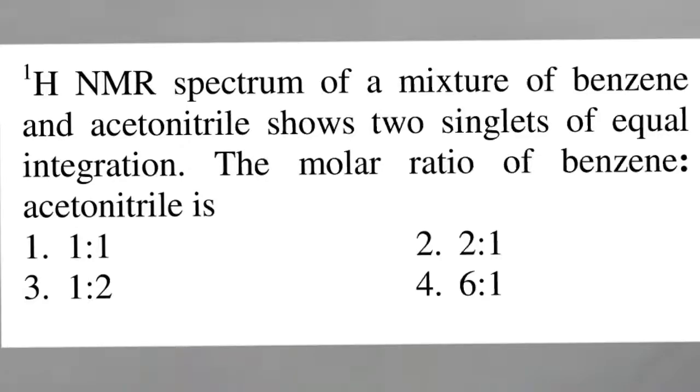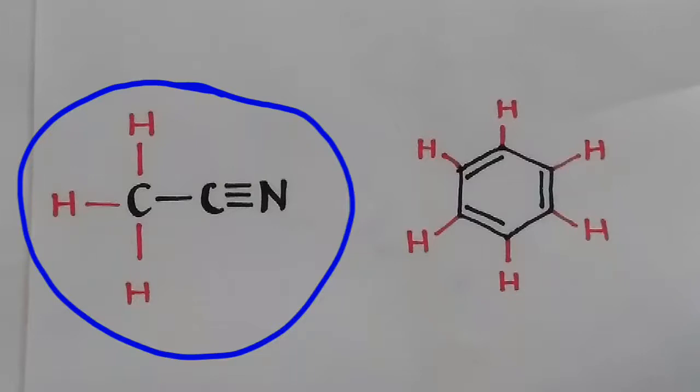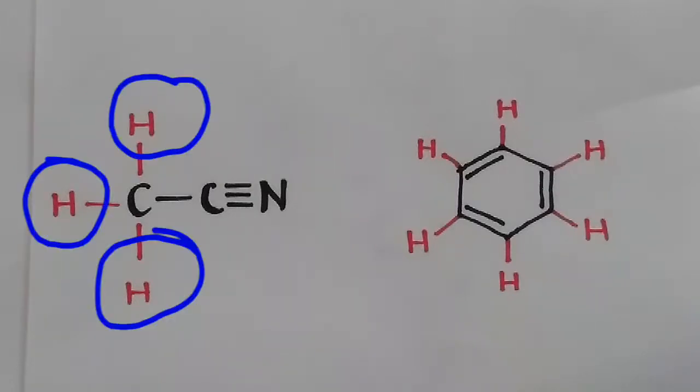In the H¹NMR spectrum of a mixture of benzene and acetonitrile shows two singlets of equal integration. The molar ratio of benzene to acetonitrile is. This is acetonitrile with three hydrogen atoms.